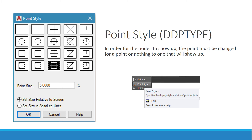When you're using the measure and divide commands, when you first use them, nothing will appear — and that's typically because your point style is not set up. I'll show you where that dialog box is in the lecture demo. By default, AutoCAD sets the point to a tiny dot, which is why you can't see anything. It's actually putting those little points there, but they don't show up. So make sure you go and change the point style.